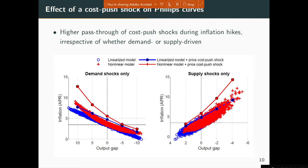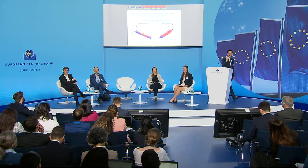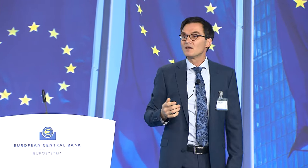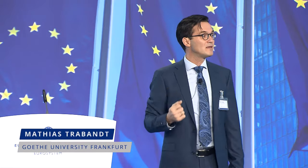We redo exactly the same experiment for the nonlinear model, which has important implications. The nonlinear Phillips curve shifts up but also tilts at the same time. If inflation is high to begin with — say you're in the 10% output gap region and inflation has ratcheted up to 8% — the same-sized markup shock pushes up inflation by a large amount compared to both the linearized model and a situation where inflation is subdued. If you do the same experiment at minus 10 output gap with below-target inflation, the same markup shock produces only very little amplification. Markup shock effects are state-dependent in our environment.